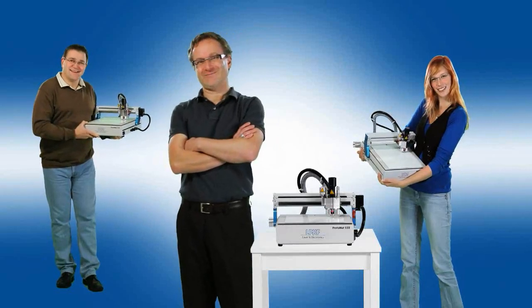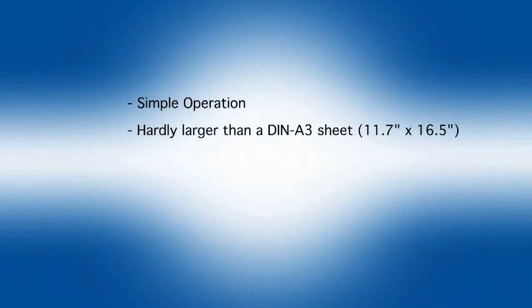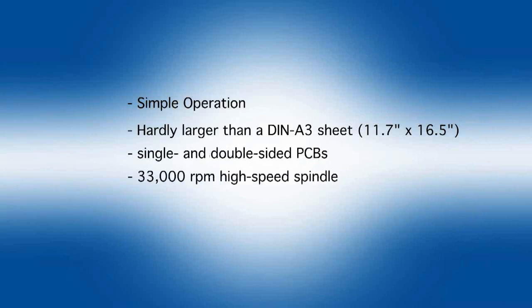The Protomat E33 features simple operation. The system has a footprint hardly larger than 11.7 by 16.5 inches. It's ideal for producing single and double-sided PCBs. The E33 integrates a 33,000 RPM high-speed spindle.